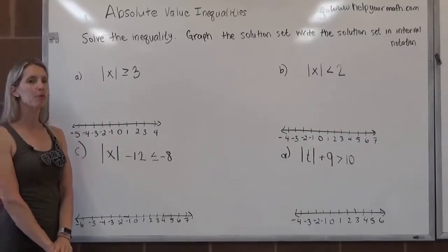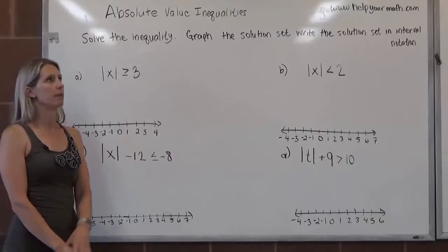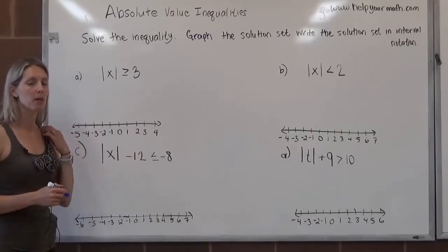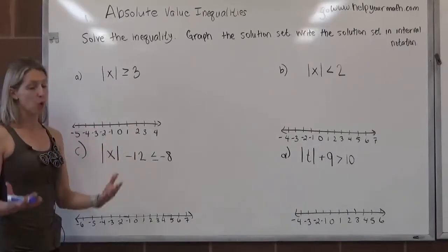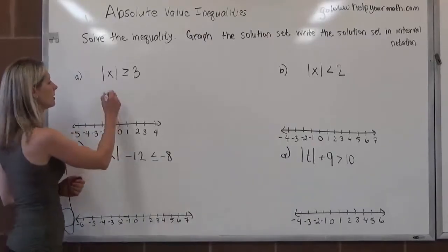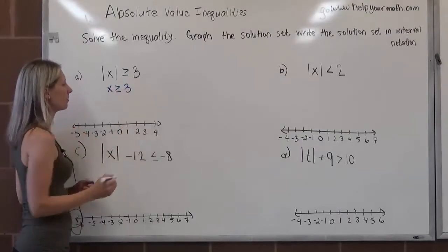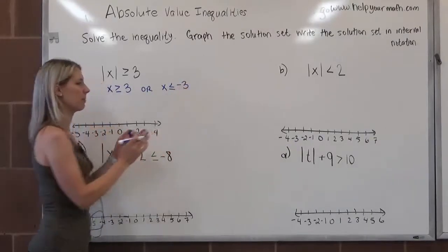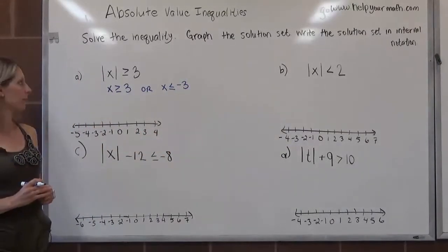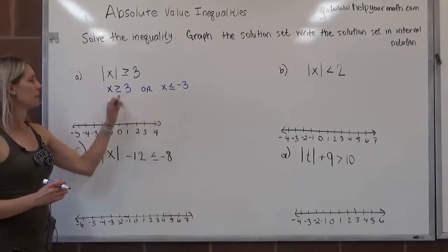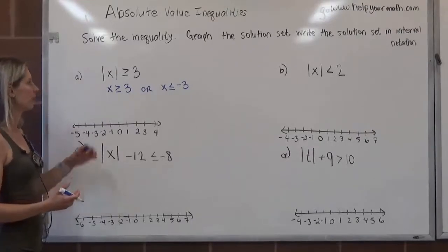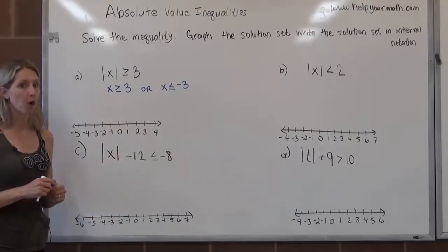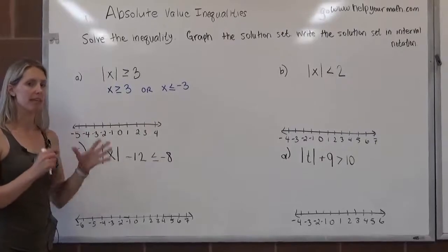In letter A, the absolute value of x is greater than or equal to 3 — that's 3 or more units away from 0. Because this is a greater than, it's an 'or' situation. We have two cases: x is greater than or equal to 3, or x is less than or equal to negative 3. Notice that when we write the two cases, we do not include the absolute value, because we're saying what's inside has to be bigger than or equal to 3 or less than or equal to negative 3.